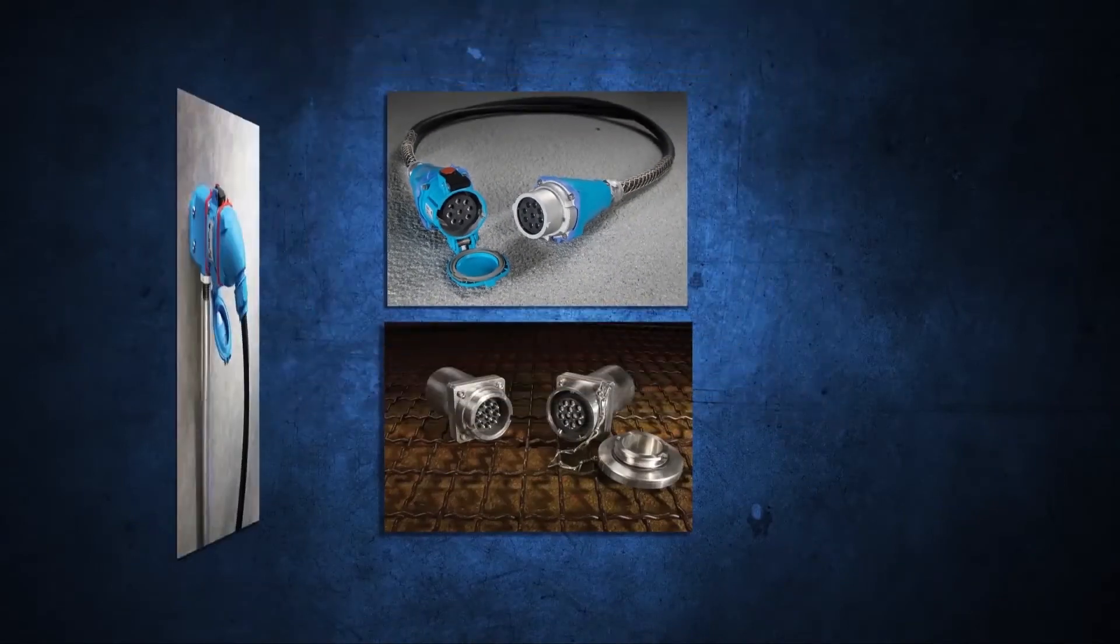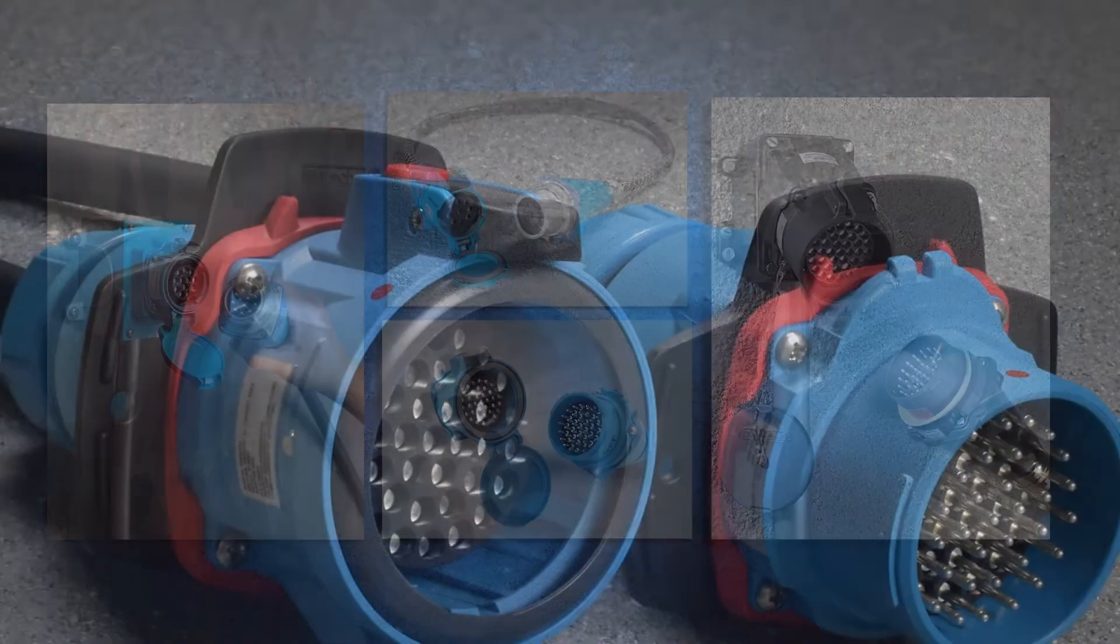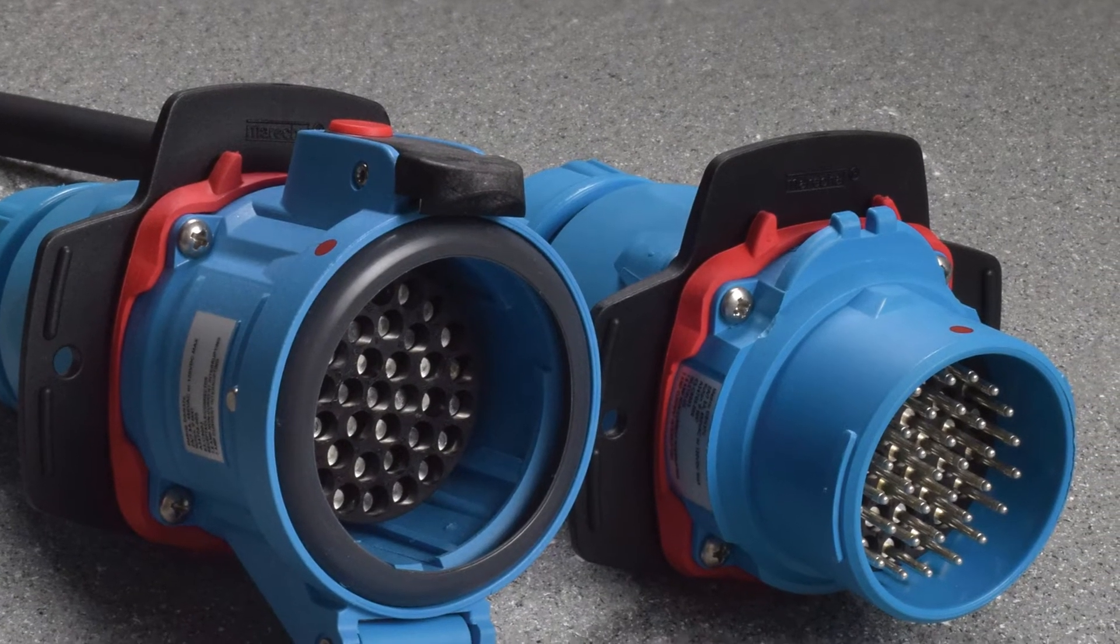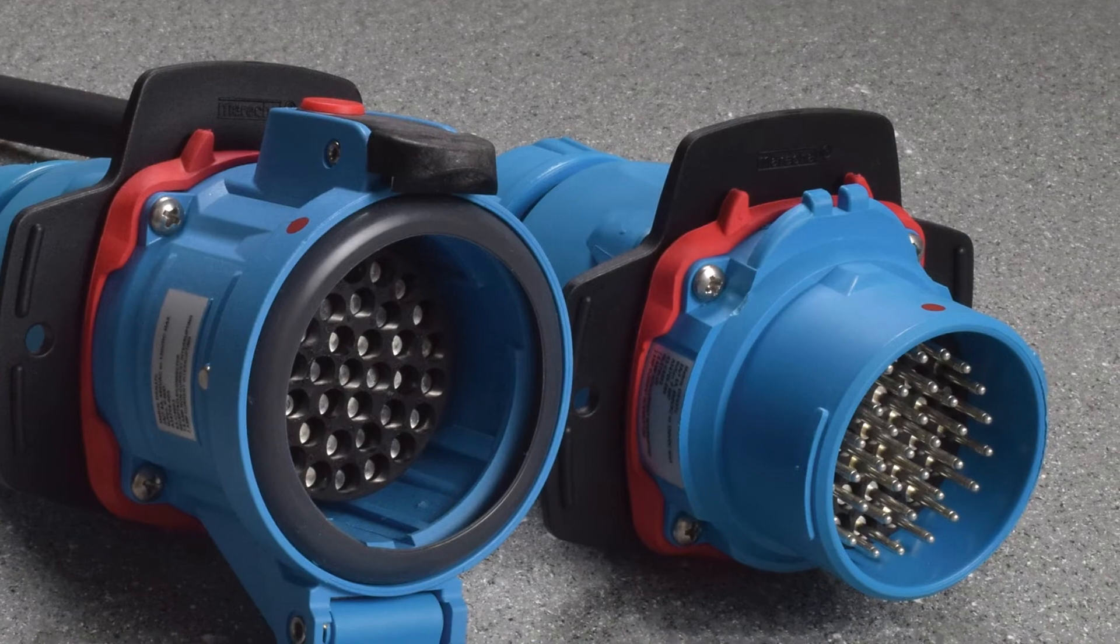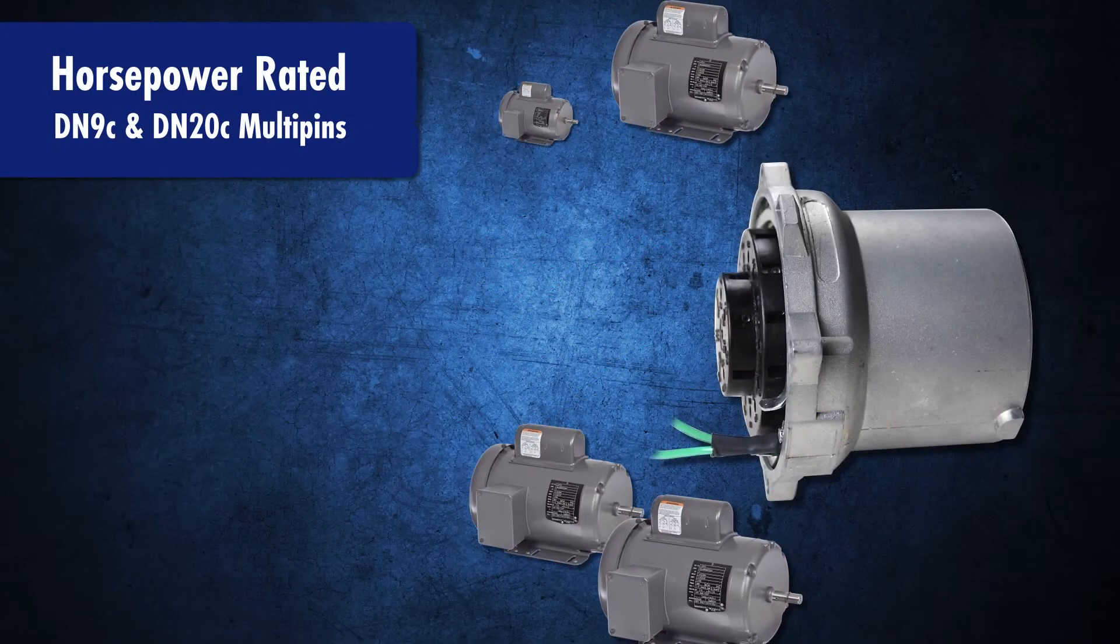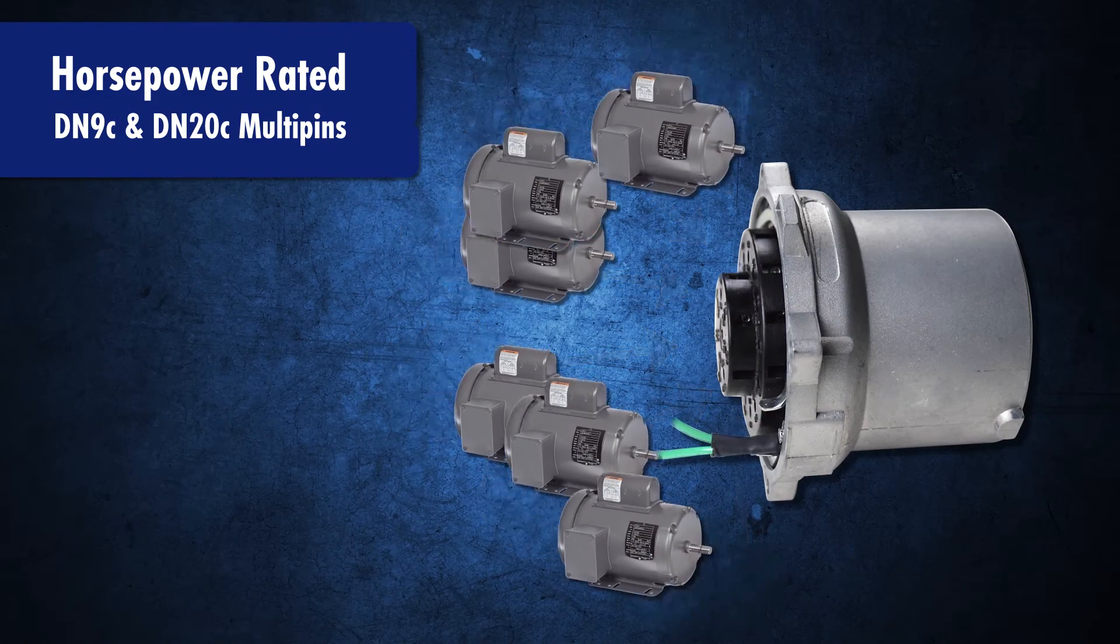Meltrix also offers a range of multi-pin devices for use in a variety of control and power applications. Robust construction including spring-loaded butt style contacts makes them ideal for applications that require regular connection and disconnection. DN series multi-pins are horsepower rated and can be used for connecting multiple motors with one device.